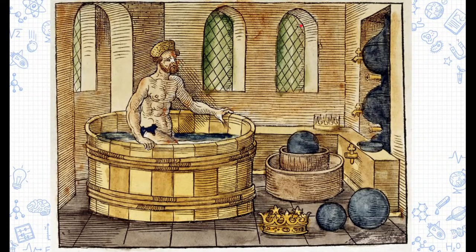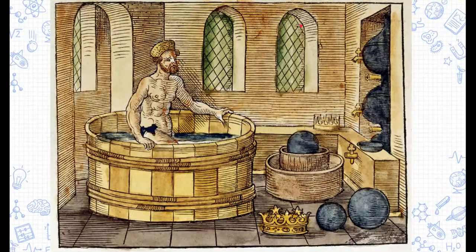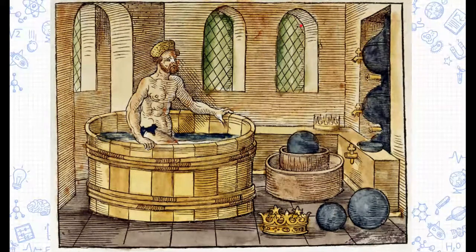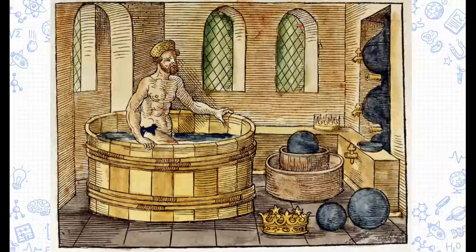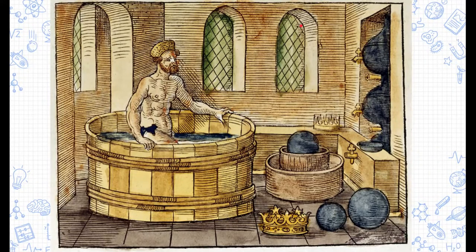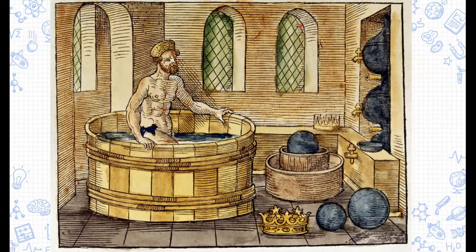He was the first, or at least we credit him to be the first, to figure out that when you place objects in water, the water rises according to the volume of the object. So Archimedes took the crown and he put it in water. He also took an equal mass of silver and an equal mass of gold and put them separately in water as well and watched them rise.